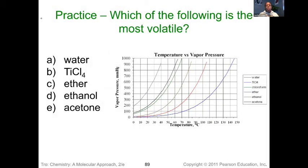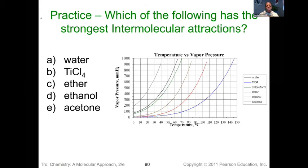Based on what we know, which of these substances is most volatile? Volatile means it can get into the gas phase very quickly, so we're looking for something with weak intermolecular forces and a high vapor pressure at low temperatures — and that would be ether. Which of these has the strongest intermolecular forces? We're looking for which one requires the greatest temperature increase to get things into the vapor phase, and that would be titanium tetrachloride.